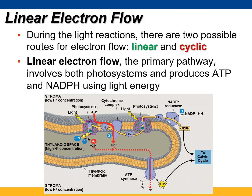In linear electron flow, we use both photosystems. We excite electrons from water in photosystem 2, hand them off down the electron transport pathway, pumping protons as we go. Excited again in photosystem 1, hand those electrons off to NADP reductase, and then make NADPH, along with some ATP as we generate that gradient.